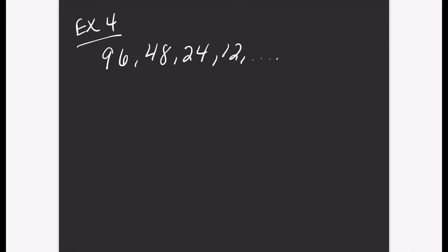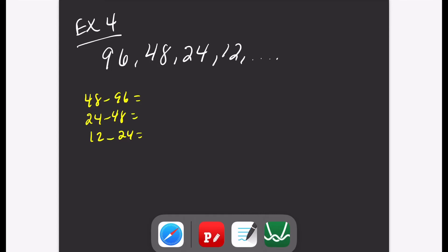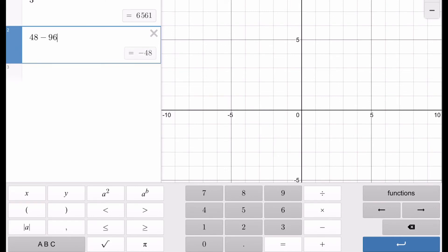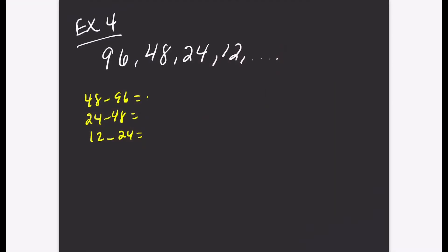For example 4, let's identify if we have an arithmetic or geometric sequence. Let's check arithmetic first: 48 minus 96 is negative 48, 24 minus 48 is negative 24, and 12 minus 24 is negative 12. Notice that this pattern is not the same, therefore it is not arithmetic. So it must be geometric.